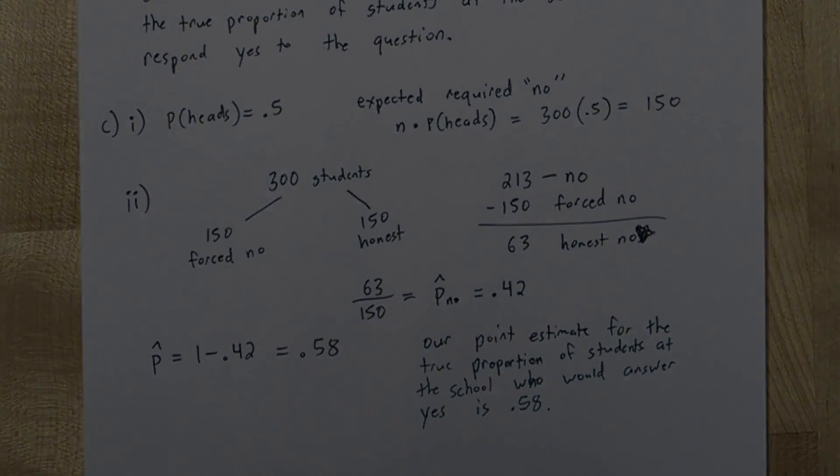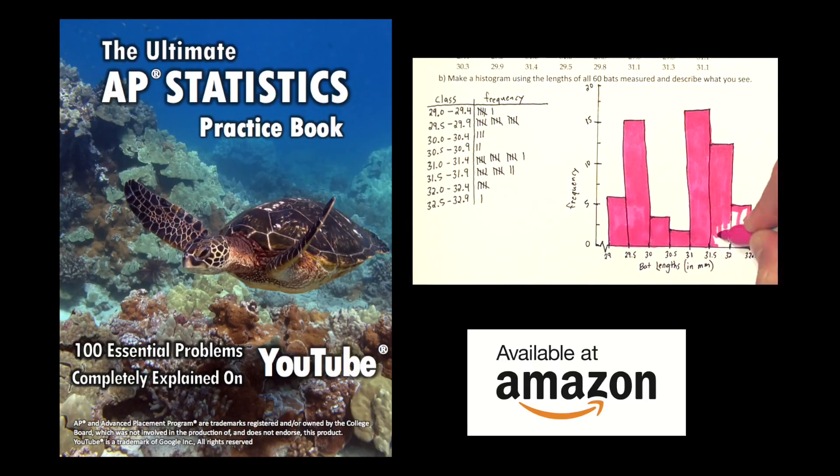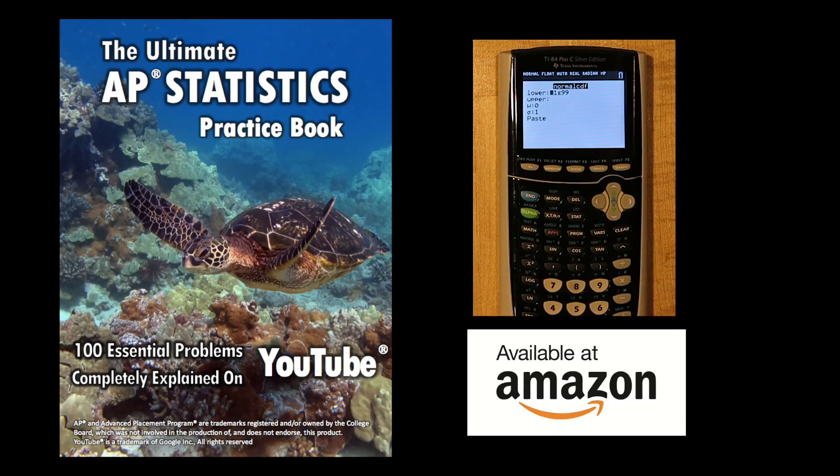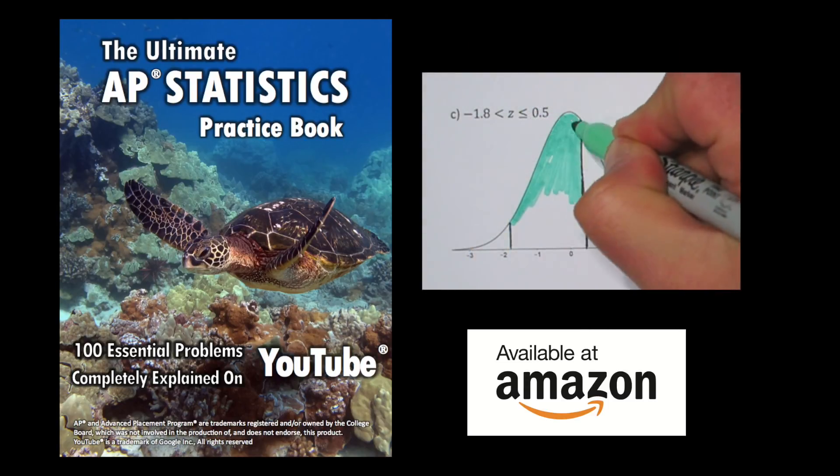If you liked my explanation of this problem, you might want to check out my book, The Ultimate AP Statistics Practice Book. It's available on Amazon and I'll put a link to it in the description. Also if you want to learn more about the process used in this particular problem, Google randomized response. It's a pretty neat technique that's used to get accurate answers to questions people might be inclined to lie on.